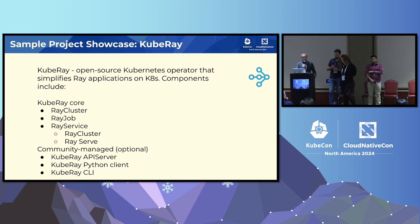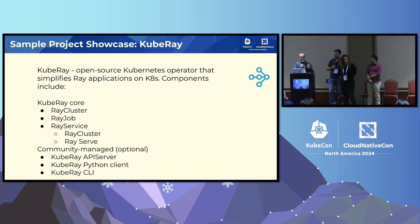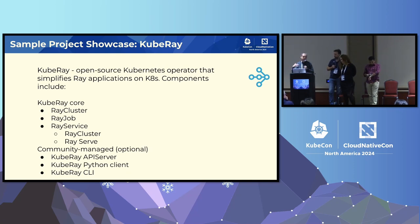KubeRay is another project that came in and presented. AI is very relevant now, and Ray is a project that allows you to train machine learning models, run scoring jobs, and run batch inference. KubeRay specifically is a subset of Ray that allows you to run Ray on top of Kubernetes. KubeRay is not yet in the CNCF, but this is something we're trying to help this project navigate so they can join the CNCF and get the benefits of having a vendor-neutral home, foster communities, and continue to grow.